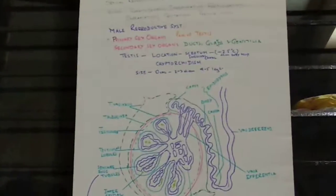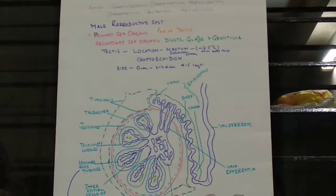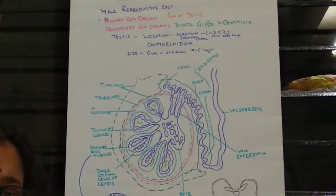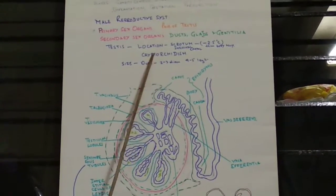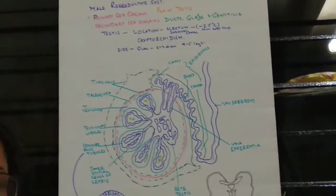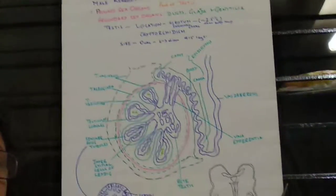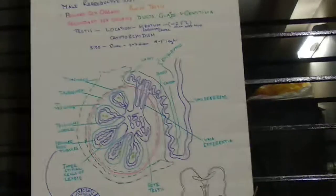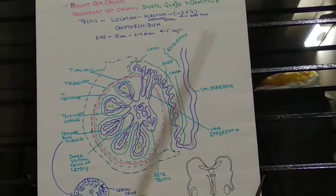The testes are located in the pelvic region outside the abdomen. During embryonic development, they initially form within the abdomen, but at the fifth month of embryonic development they move into the scrotal sac — this is called the descent of the testes. The testes move into the scrotal sac because the process of sperm production, called spermatogenesis, requires a temperature 2.5 degrees Celsius less than our body temperature, which is maintained by the scrotal sac.